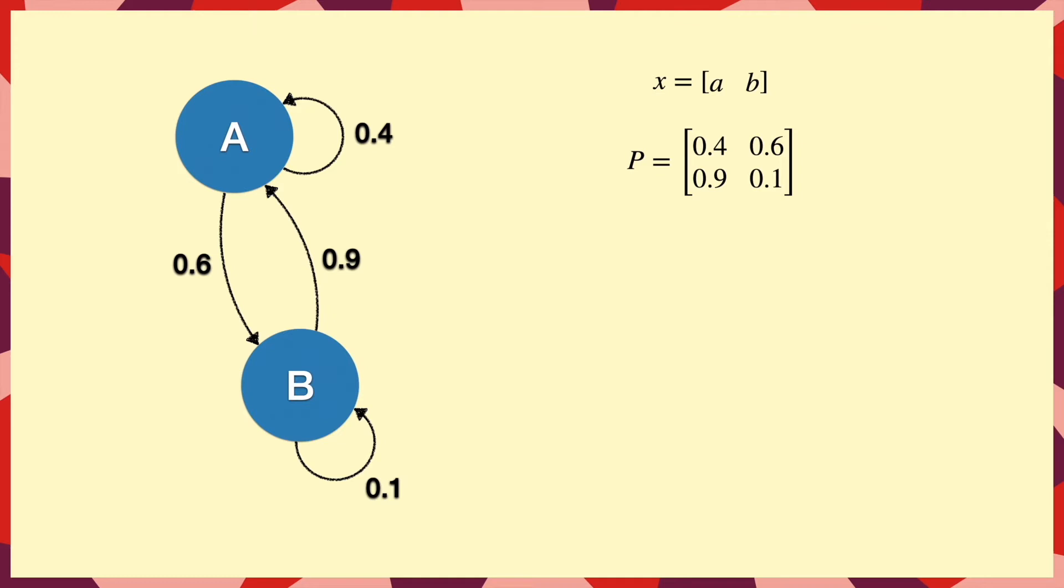Now to make use of these, if we want to see the distribution of where we'll be after one step, then we simply multiply X by P. And for the case where we start at A, represented by setting the vector X equal to [1, 0], this gives us the result we expect.